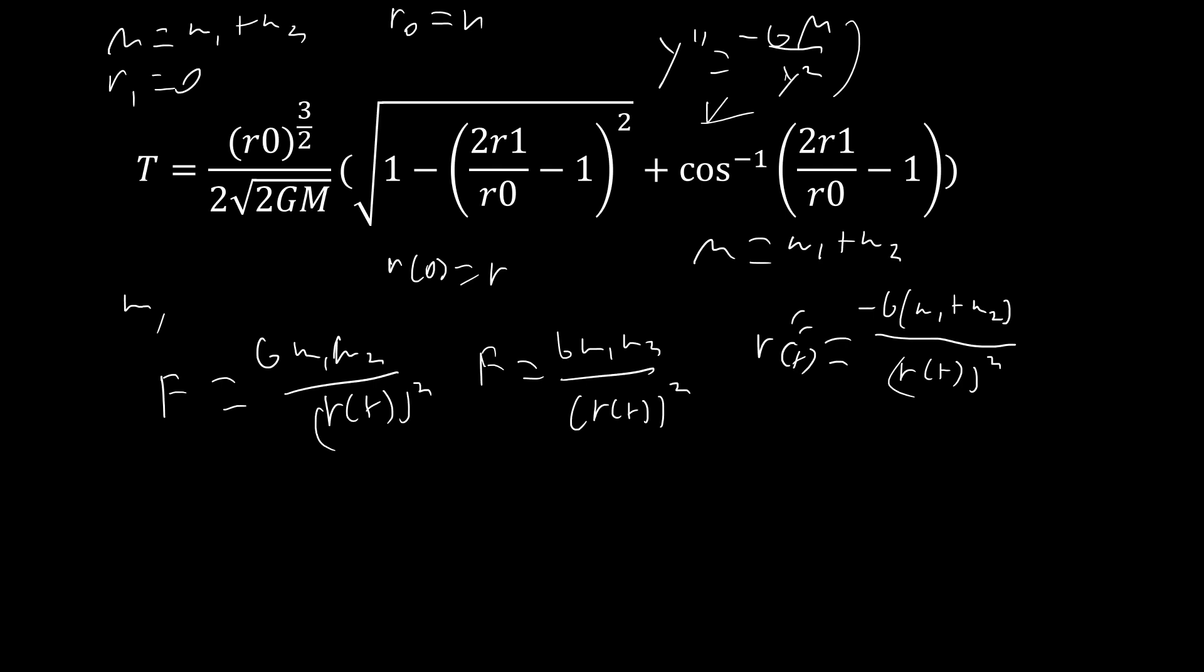So if we plug this into our formula we're going to get t equals r to the three halves over 2√(2G(m1+m2)). Then for this square root, when r1 is zero, this whole thing squared is just going to be negative one squared, which is one, and so that whole square root is just going to disappear, so we don't have to worry about that.